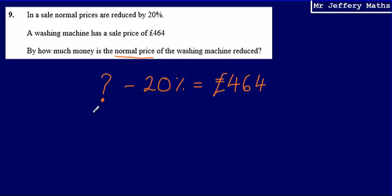So what I can think of as my normal amount, if I think about my normal price as being 100%, that's the usual price, that's the whole amount, that's the whole price of the washing machine and it's had 20% taken off of it. So 100% take 20% away means that I'm left with 80%. And so I can actually say that 80% is equal to £464.